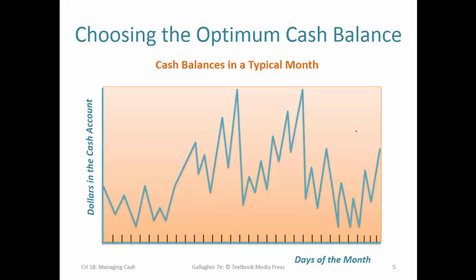When we chart out the trend of our cash balance — this might be our corporate checking account, with dollars in the account on the vertical axis and days of the month ticking by from 1 through 30 — you can see that the cash fluctuates with inflows and outflows, sometimes unpredictably.